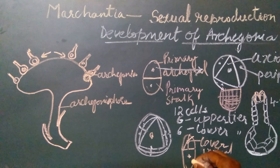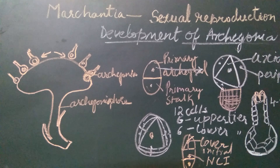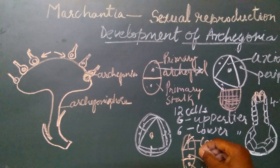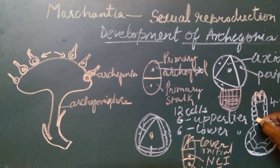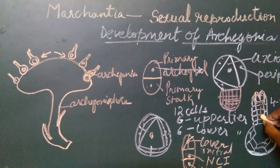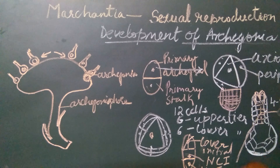The lower cell divides again to form two cells. The upper of these is called the neck canal initial and the lower cell is called the venter canal initial. The neck canal initial divides transversely a number of times and forms six to eight neck canal cells, which are seen in the neck region.